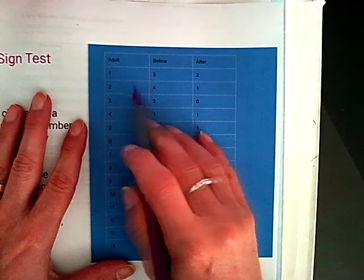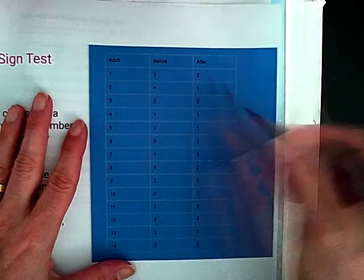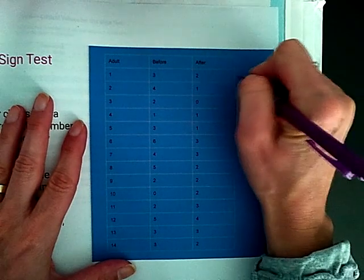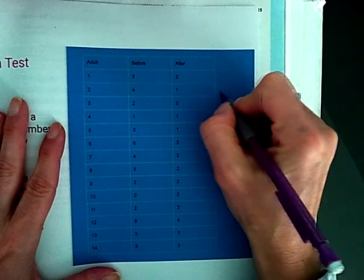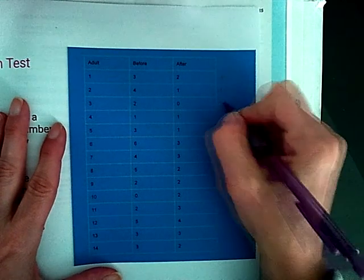So you can see adult 1 went from 3 to 2. That's going to give me a positive sign. Then we went from 4 to 1. That's also a positive. Positive.